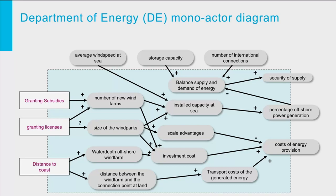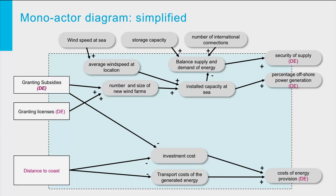Let's first get back to the mono-actor diagram for the perspective of the Department of Energy. Extending it with criteria, means and additional factors for the other actors would make the graphics too crowded, so I decided to simplify the original diagram a bit. I aggregated some of the factors like the number and size of the wind farms, and left out some intermediate factors and less essential effects of scale advantages. The essential relations remain. To emphasize the effects of location choice on capacity, I added the factor 'average wind speed at location' and indicated that the Department of Energy is the owner of the criteria and means by adding the letters DE to those factors.